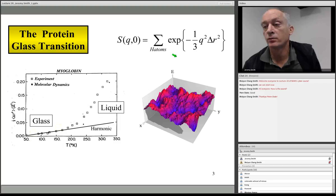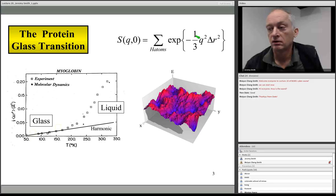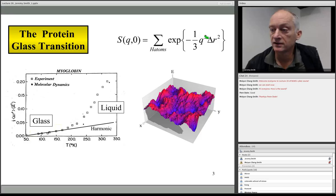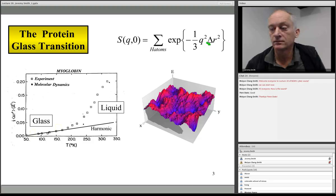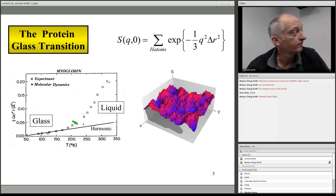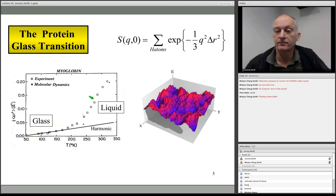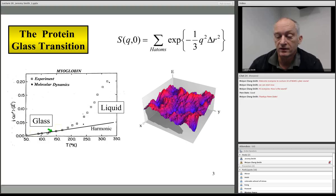This Gaussian approximation assumes elastic scattering is Gaussian in q — a common assumption we'll return to. If q is small relative to the displacement, this holds in a Taylor expansion. The mean square displacement can be derived from this. An early example shows mean square displacement averaged over the hydrogen atoms in myoglobin as a function of temperature: an approximately linear regime at low temperatures, and then something else happening.